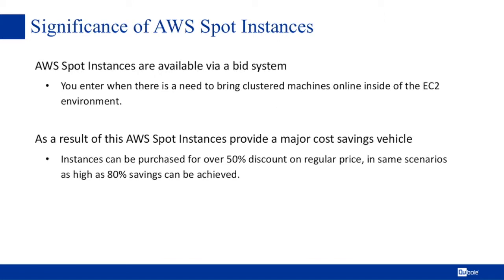When we think about acquiring AWS spot instances, we first need to acknowledge that we're going to do this through a bid system. In this bidding process, you say 'I'm willing to pay a certain dollar amount for an instance,' and this is where you can achieve significant savings — purchasing these instances at 50, 60, 70, or even 80% discount off the standard on-demand price. This gives us a significant opportunity to improve our budgets while still pushing through the workloads we want to get done and reducing our infrastructure costs.